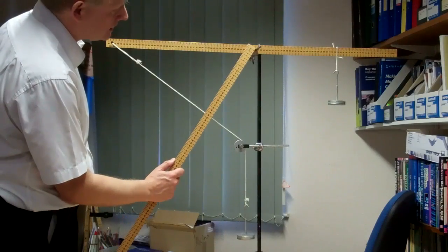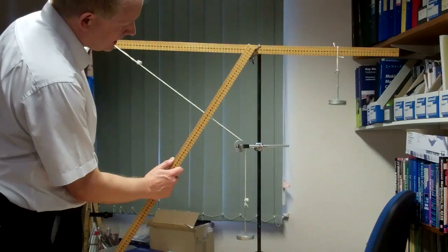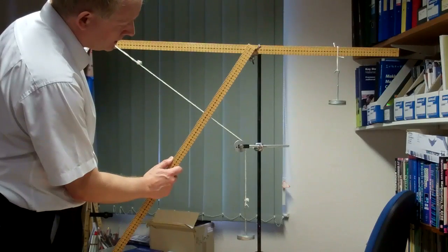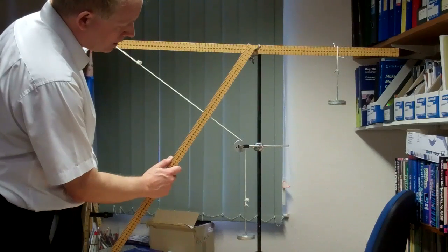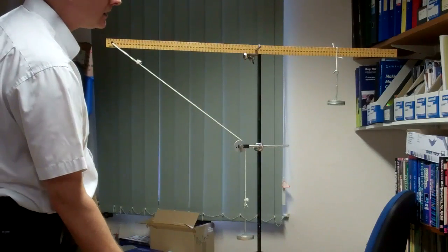Now if we look at this distance between the centre of the pivot, measuring it perpendicularly to the line of action of the string, we can see that distance is also 28 centimetres.